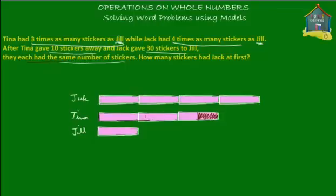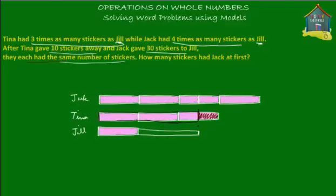Tina has these stickers left, marked in black. So then obviously Jack and Jill must also have the same number of stickers left. If we extend this line on both sides — top as well as bottom — we see that Jill has these many stickers, from the beginning of the pink block all the way to the black line here. And Jack must also have the same number of stickers left as Tina and Jill, so this black box is how much Jack had left.